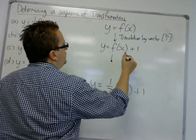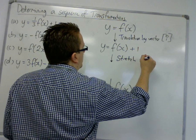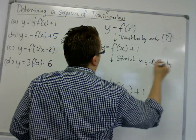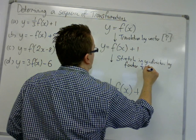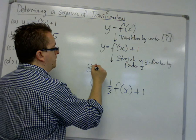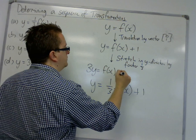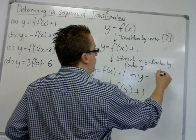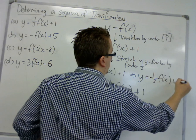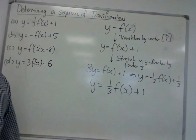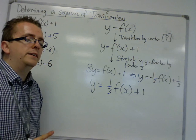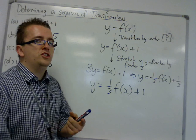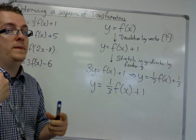And then, if I do the stretch in the y direction by a factor of one-third, y gets replaced with three y. So, I would arrive at y is equal to one-third f of x plus one-third. Now, this isn't the same as what I should be arriving at. So, although I may well have identified the two transformations correctly, I have done them in the wrong order.